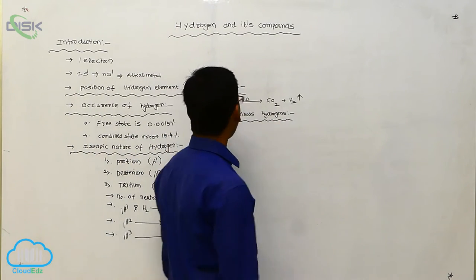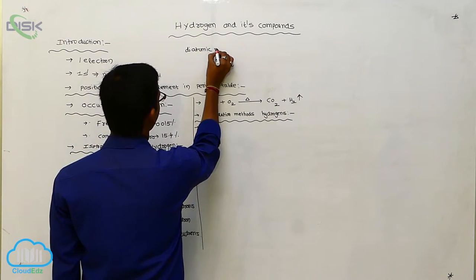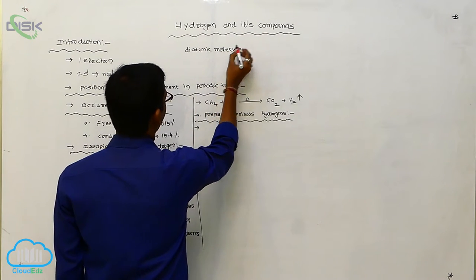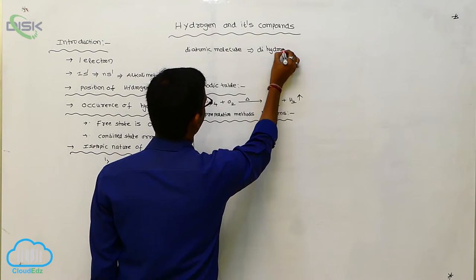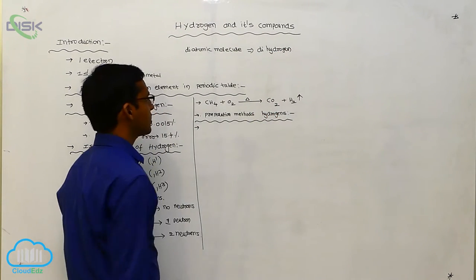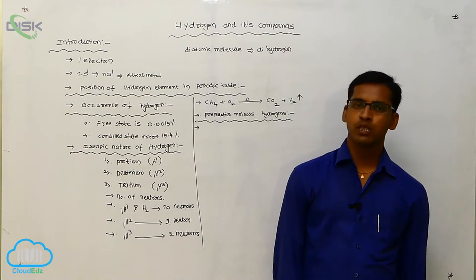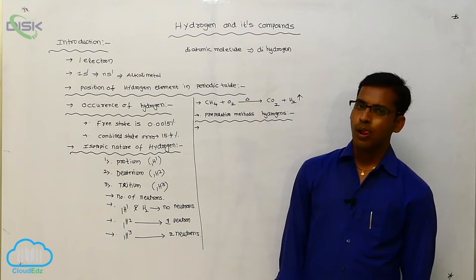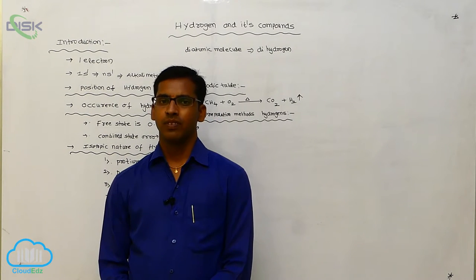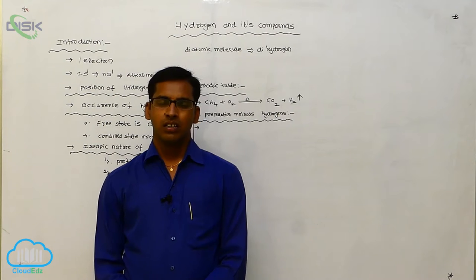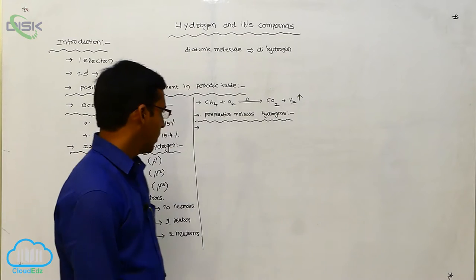Generally, hydrogen is a diatomic molecule, which is called dihydrogen. In the hydrogen molecule, a sigma bond is present. Here, only SS overlapping takes place — there are no p orbitals. Due to the non-availability of p orbitals, it undergoes SS overlapping.